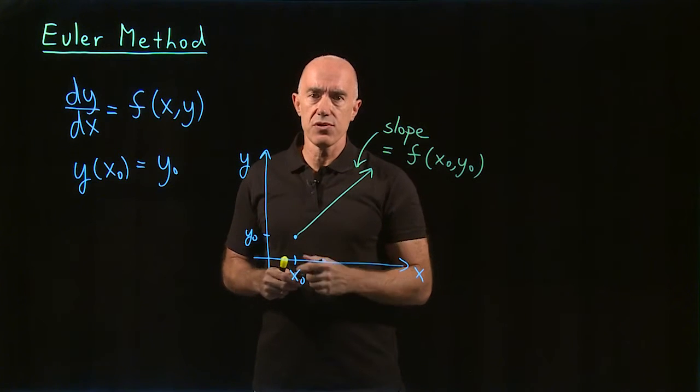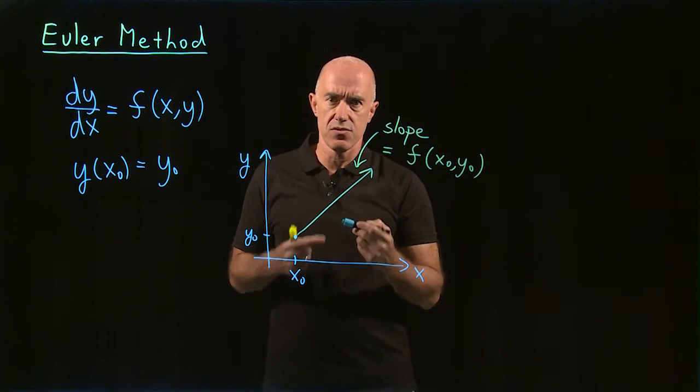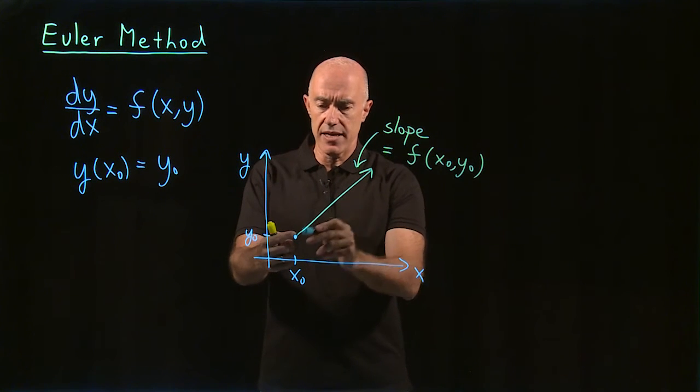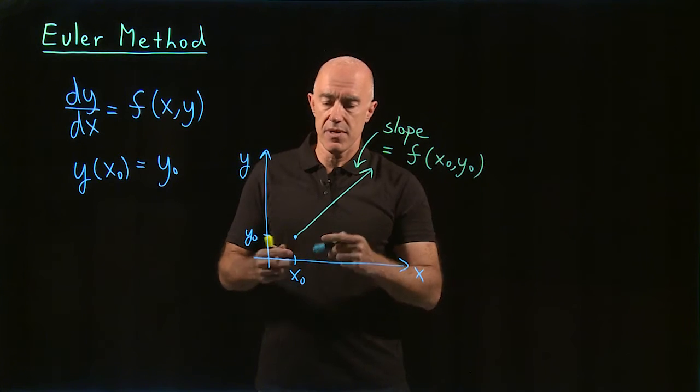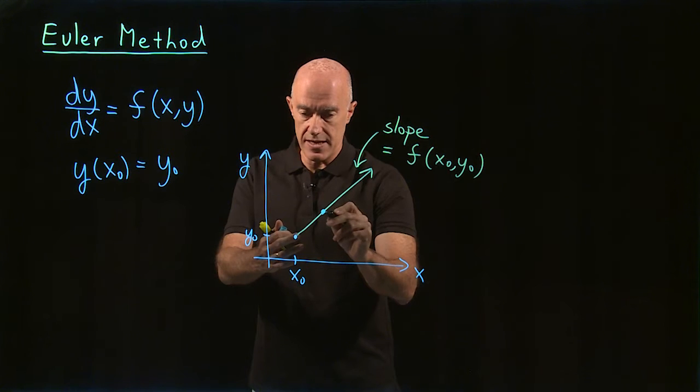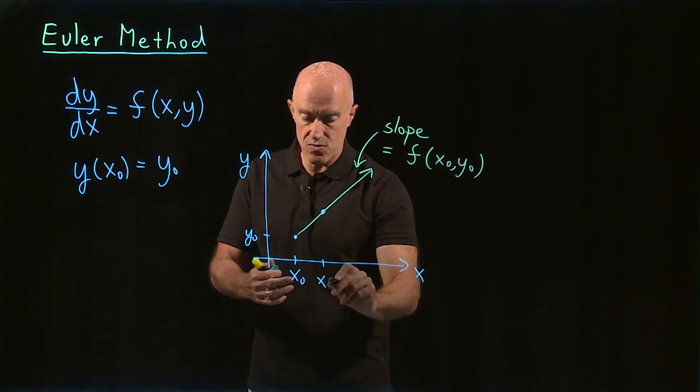So we have the slope. And then a numerical solution says, okay, so let's approximate the solution y of x as a line, a line segment that follows this slope. So we follow this slope out to say here, to the point x1.